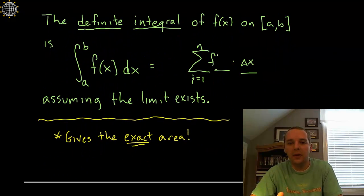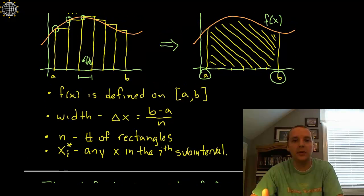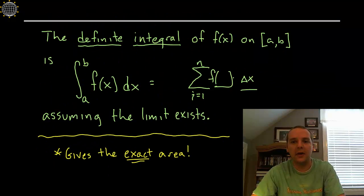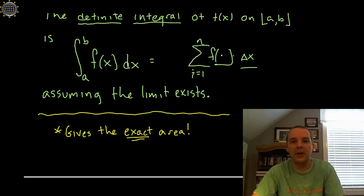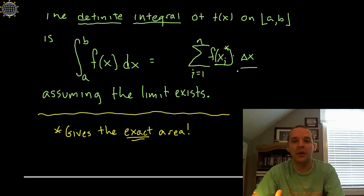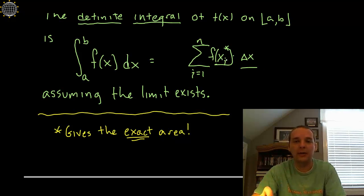The height is F of some X value. Now what X value do we want? There are lots of different ways — you can have a left-hand sum, a right-hand sum, an upper sum, or a lower sum. We don't want to deal with all those. We're going to let the X value be some abstract generic value, X sub I star, which is the X value we can choose anywhere within the I-th sub-interval. This gives us width times height — the area of the I-th rectangle — and we add up all N of them.